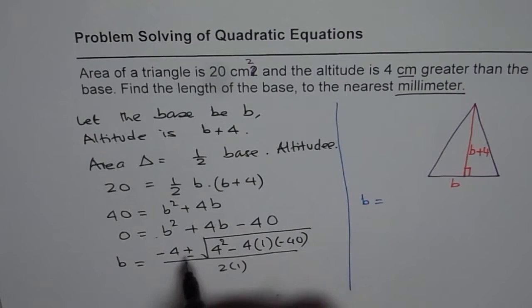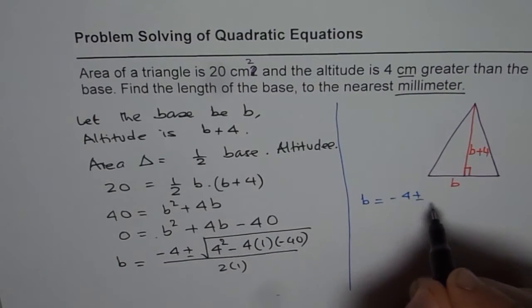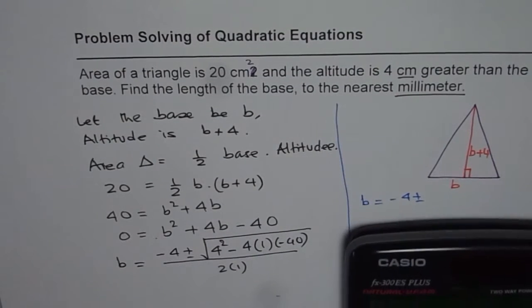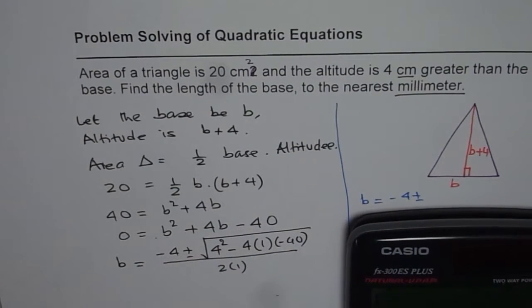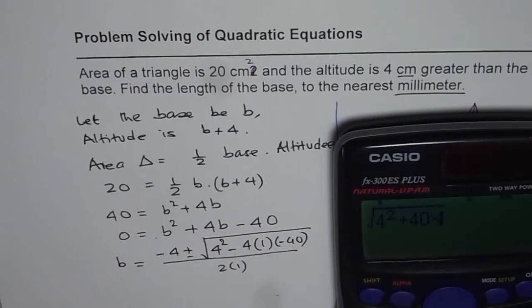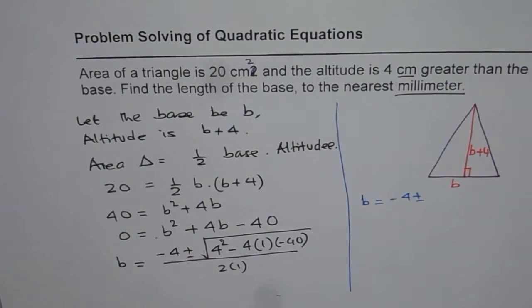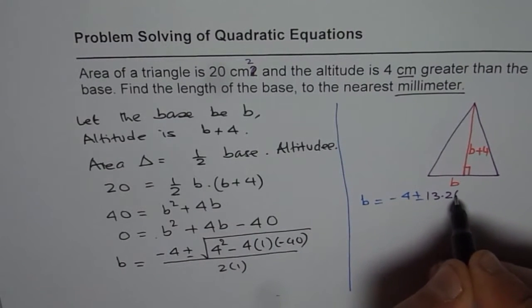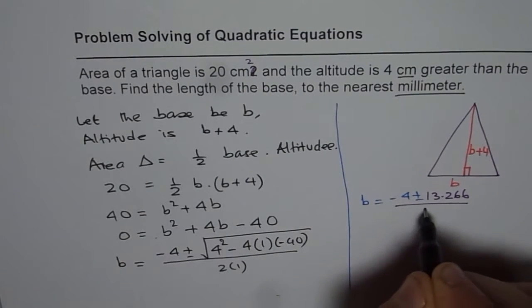So we get B equals negative 4 plus or minus the square root. Let us calculate using the calculator. Within the square root we have 4 squared, and minus times minus becomes plus, giving us 4 squared plus 4 times 40, which equals the square root of 176, that gives us 13.266.